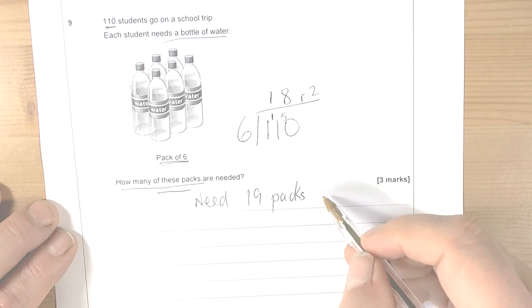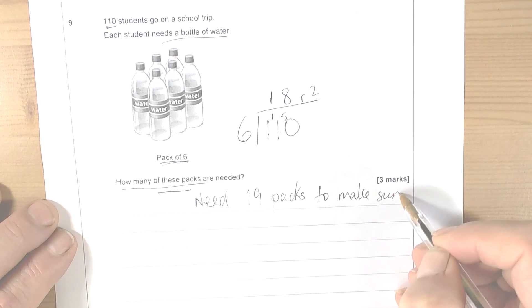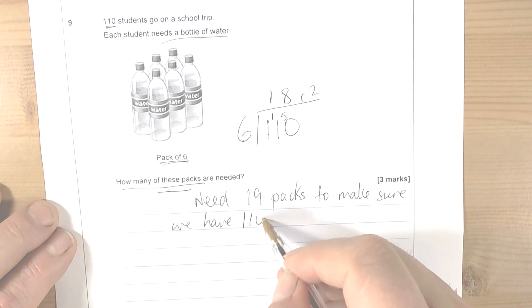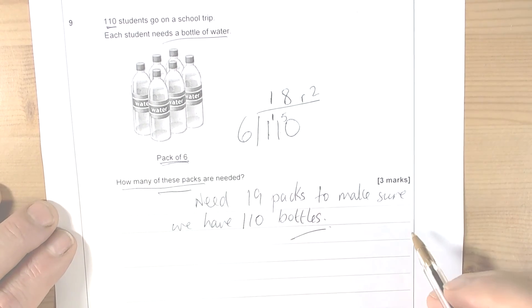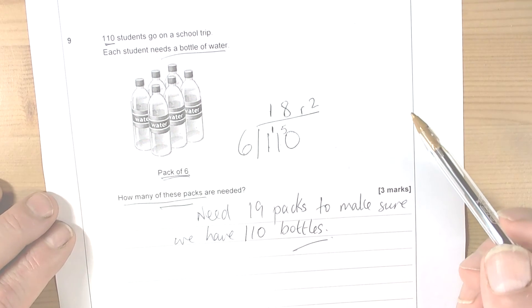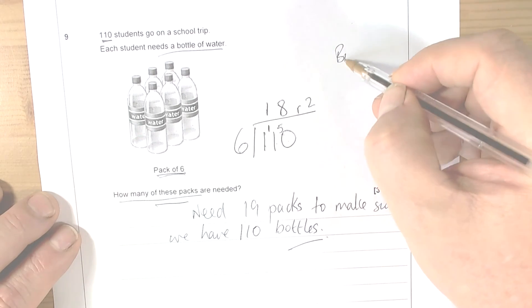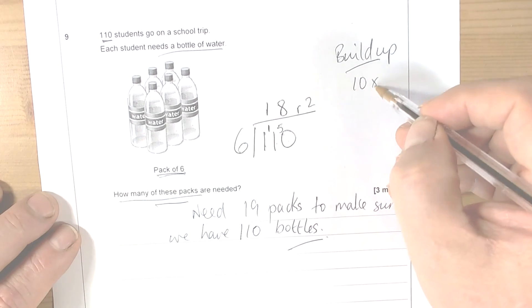So we need 19 packs to make sure. Okay, so that's one of the ways of doing that kind of question. As I say, you can build it up, so you can use a build-up method. So you could say, well, 10 packs would be 60.